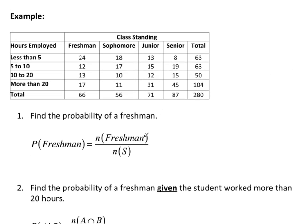Okay, let's go back to this class standing and hours employed that we've worked with a couple of times. So first of all, let's just find the probability of a freshman. Well, a freshman, there's 66 of them, over 280, because there's a total of 280 people in this table. And again, it wouldn't hurt if we denoted this as being the empirical, because it really exists from a sample.